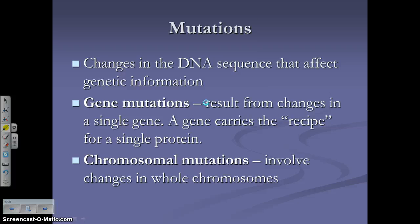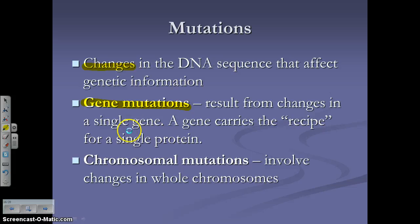What if something goes wrong? A mutation is simply a change in the DNA sequence that affects genetic information. There are two types: gene mutations, which result from a change in one single gene — like one letter being changed — and chromosomal mutations, such as Down syndrome, where an error occurs with an entire chromosome, perhaps one too many or one too few.